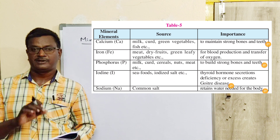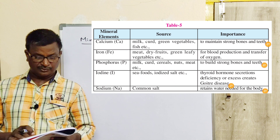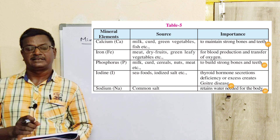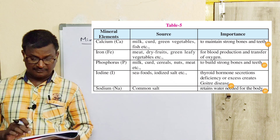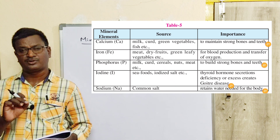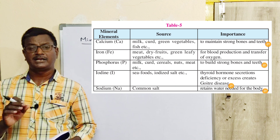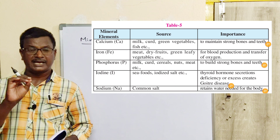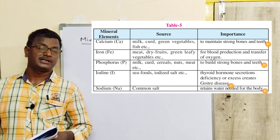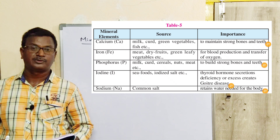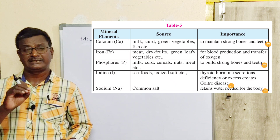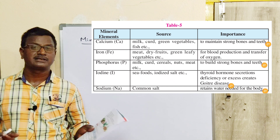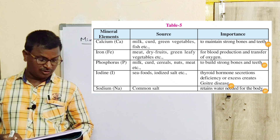Iron sources: meat, dry fruits, and green leafy vegetables. Functions of iron: blood production and transport of oxygen. Hemoglobin mainly contains iron — iron and globin proteins combine to form hemoglobin, which is the main carrier for transportation of oxygen from the lungs to body parts.